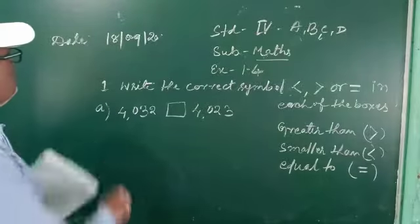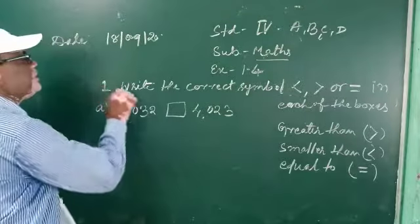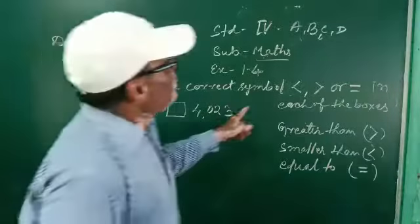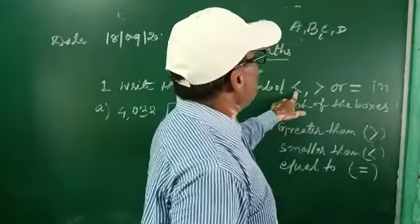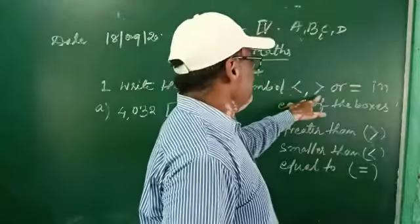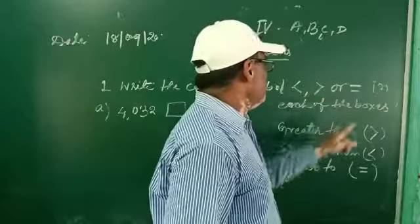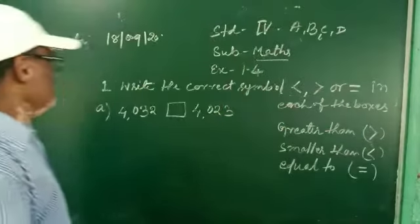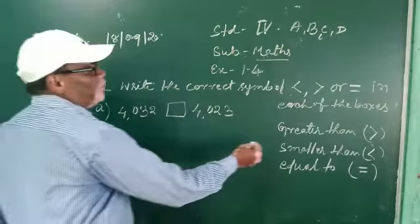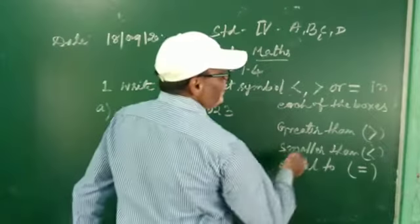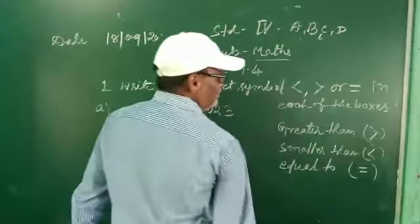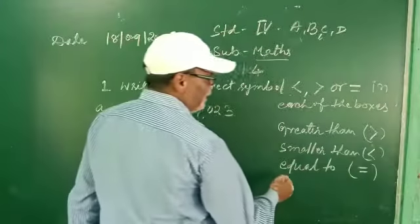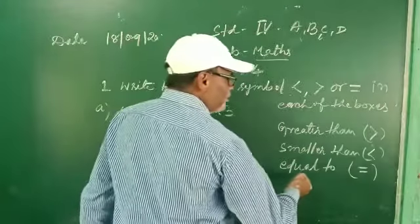First question: write the correct symbol — less than, greater than, or equal to — in each of the boxes. Here we already know what the greater than sign is, what the smaller than sign is, and equal to.